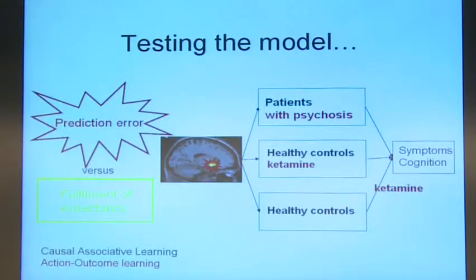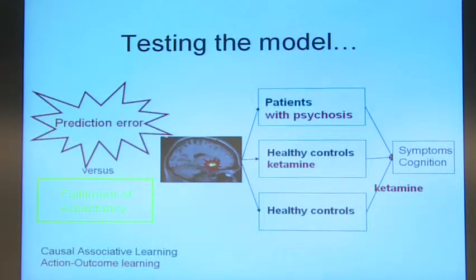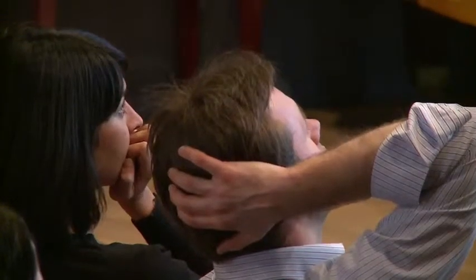Moving on within the same context, there's something else we've been doing. We've been getting interested in the notion of action-outcome learning. We've talked about prediction error in terms of simple stimulus-stimulus or stimulus-outcome learning. But what happens if you relate your predictions to the actions that you've made? This may be a very important concept in schizophrenia — models based on the idea that when you make an action, you predict the sensory consequences may help to explain passivity phenomena or delusions of control.